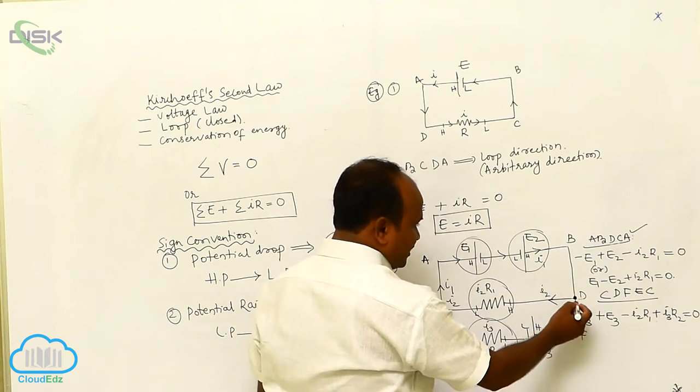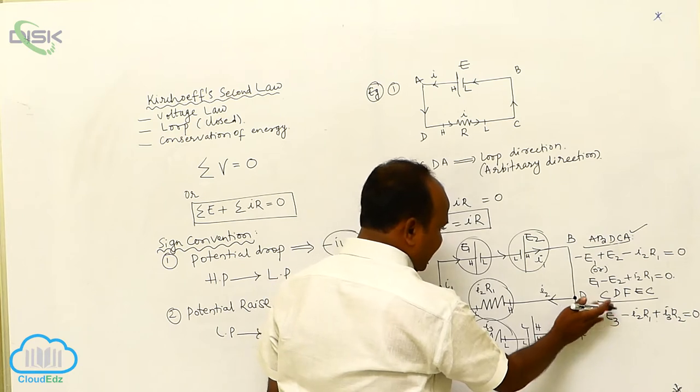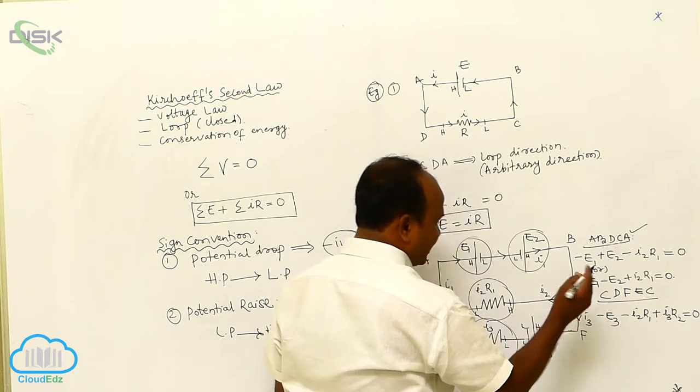Now here, higher to lower is taken as drop. Therefore, it is negative.